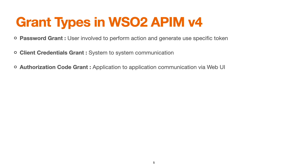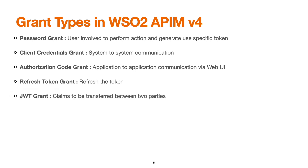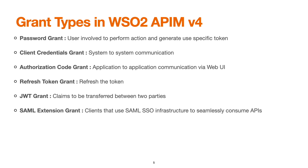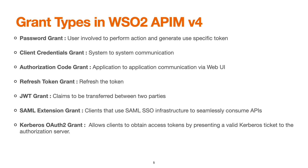The refresh token is not a specific grant type per se, but it helps to refresh the token generated in previous steps. Next, we have the JWT grant, used when end user attributes or claim values need to be transferred between two parties. The SAML extension grant is used when a client uses SAML SSO infrastructure to consume APIs. The Kerberos OAuth2 grant is used in Kerberos-based infrastructure, allowing a client to obtain an access token by presenting a valid Kerberos ticket to the authorization server. Finally, the NTLM grant type is a traditional grant type based on Windows-based authentication.